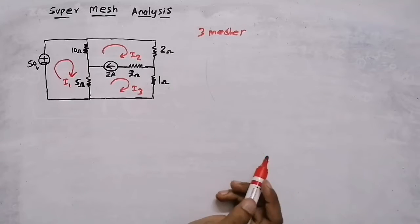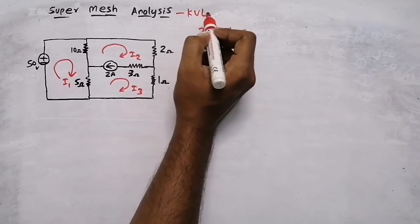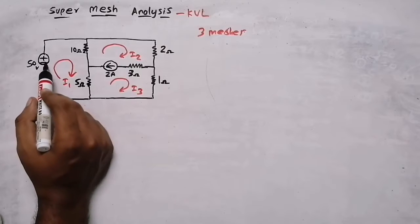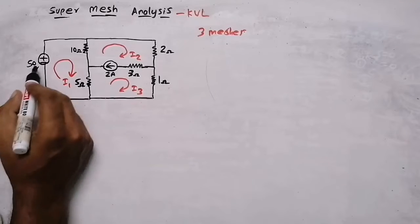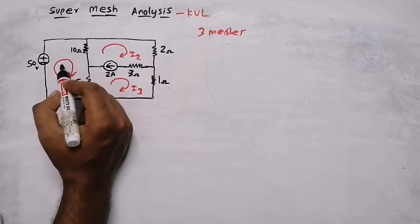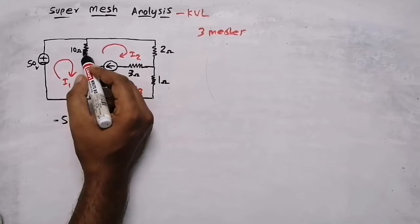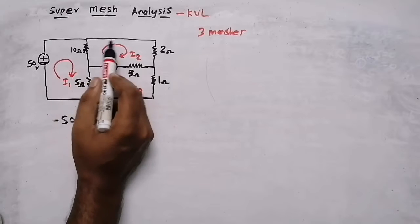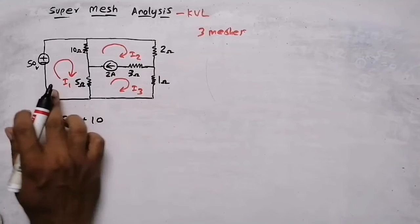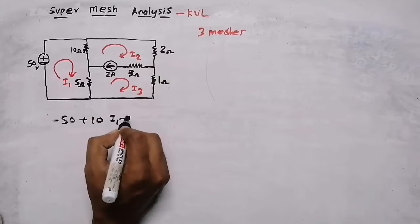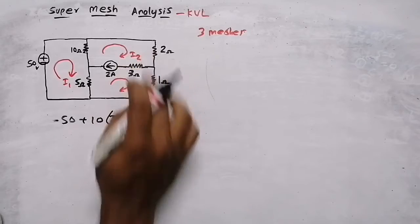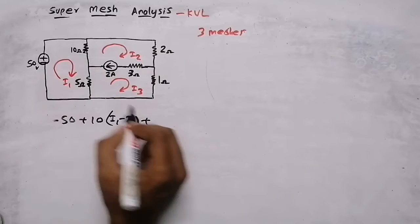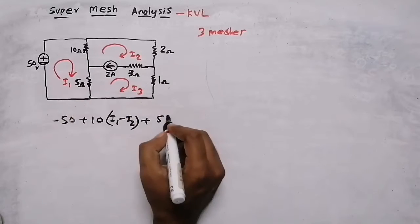In mesh analysis I will apply Kirchhoff's Voltage Law. Writing the mesh equation for mesh one: the current flows in clockwise direction and enters the negative terminal, so the first term is negative 50. Then for the 10-ohm resistor, which is common to both mesh one and mesh two, I write 10(i1 minus i2). Then the 5-ohm resistor is common to mesh one and mesh three, so I write 5(i1 minus i3).